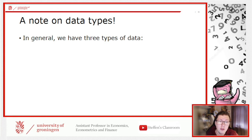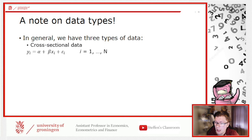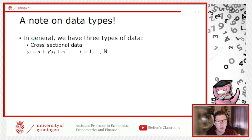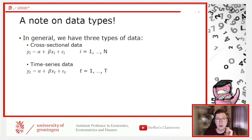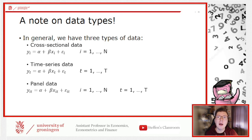We have three types of data. First, cross-sectional data: multiple observations at one point in time — like asking everyone in a classroom to fill out a survey at the same moment. Second, time series data: one entity observed over multiple periods of time — like asking one student to fill out a survey each of seven weeks.